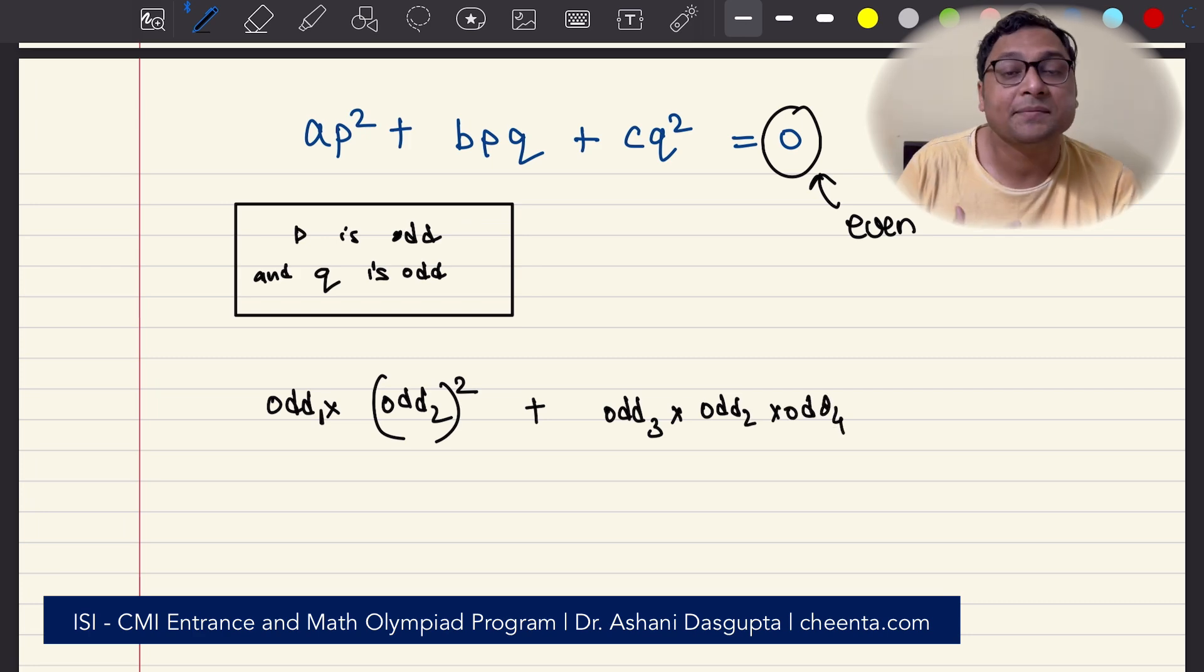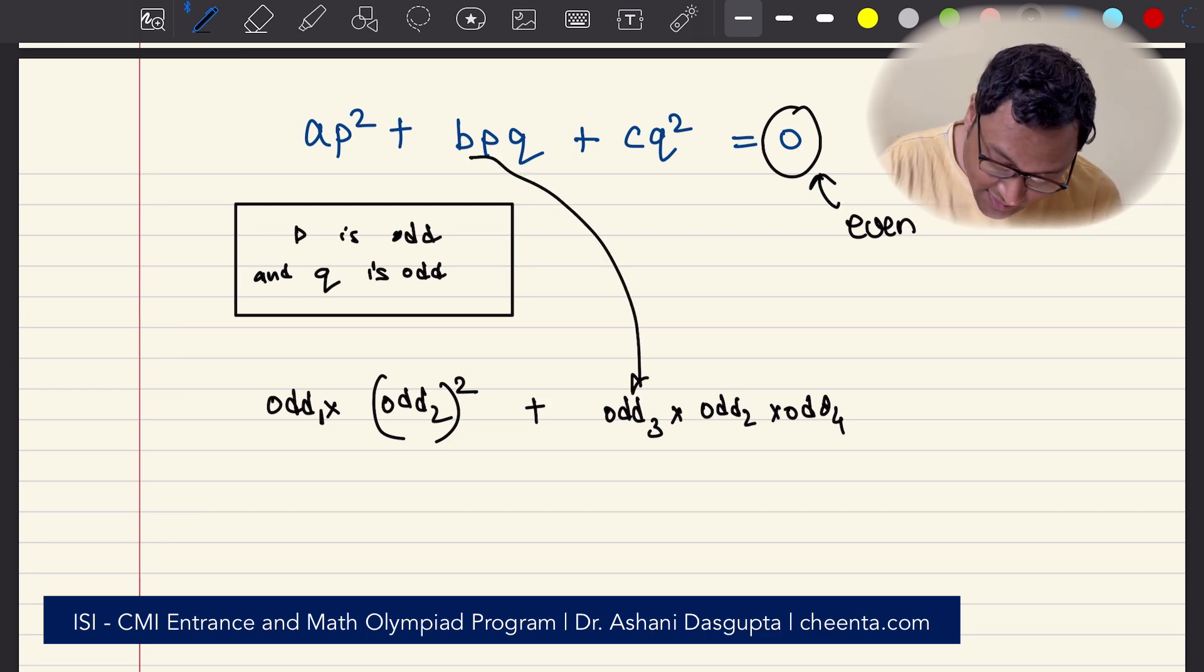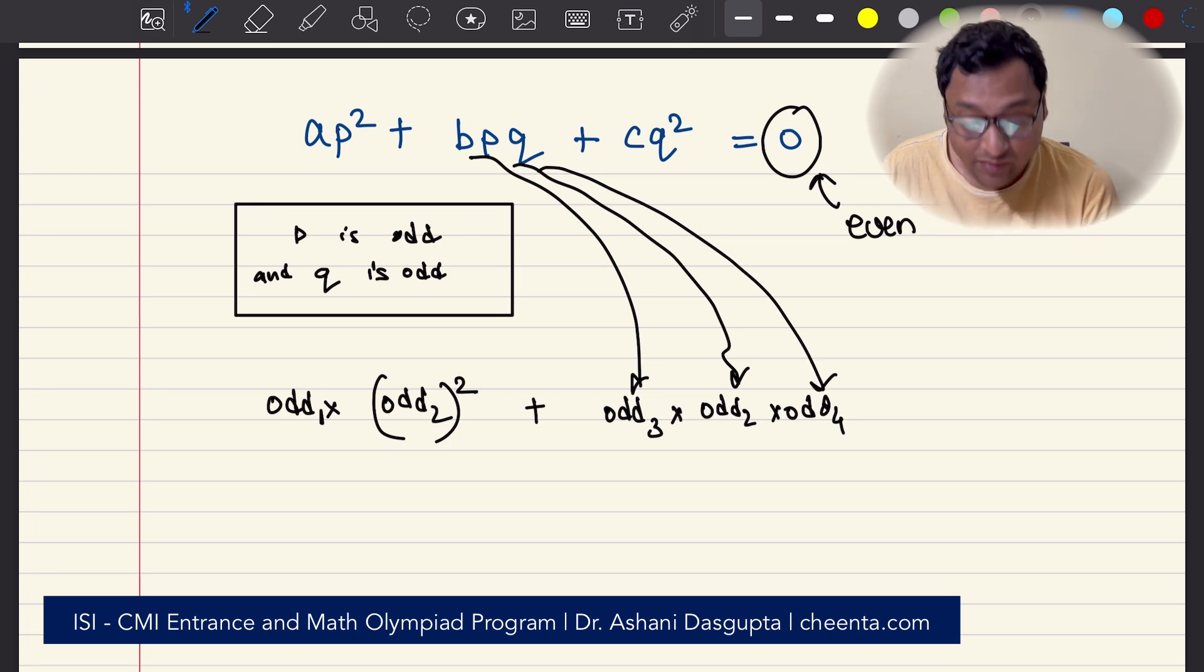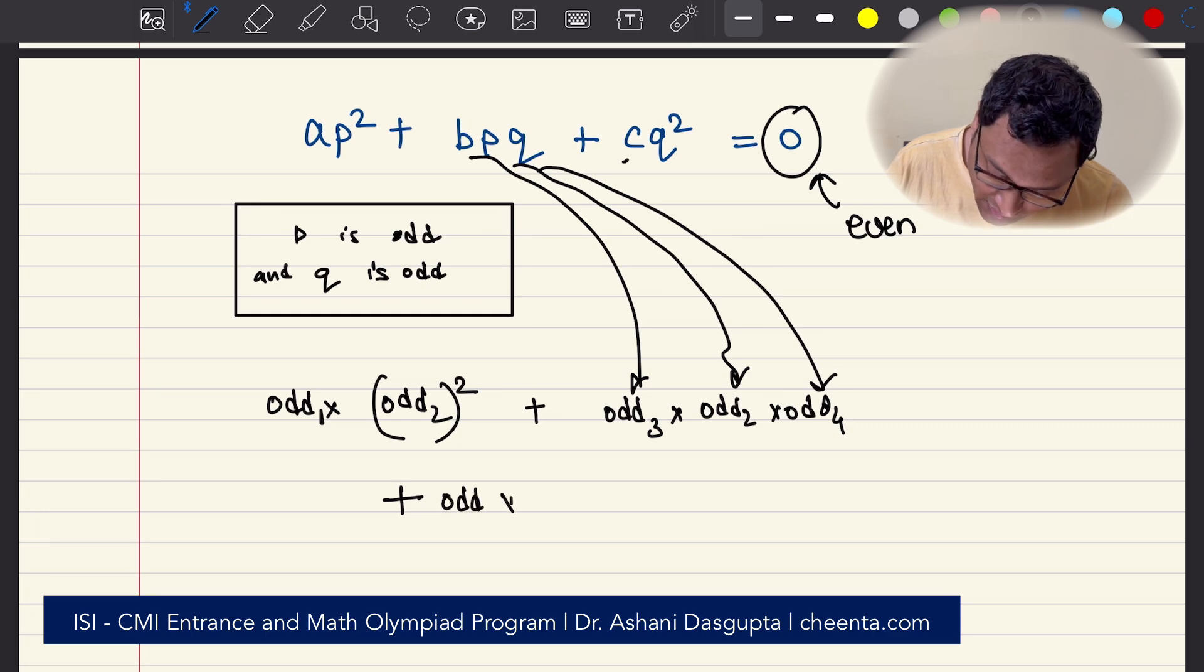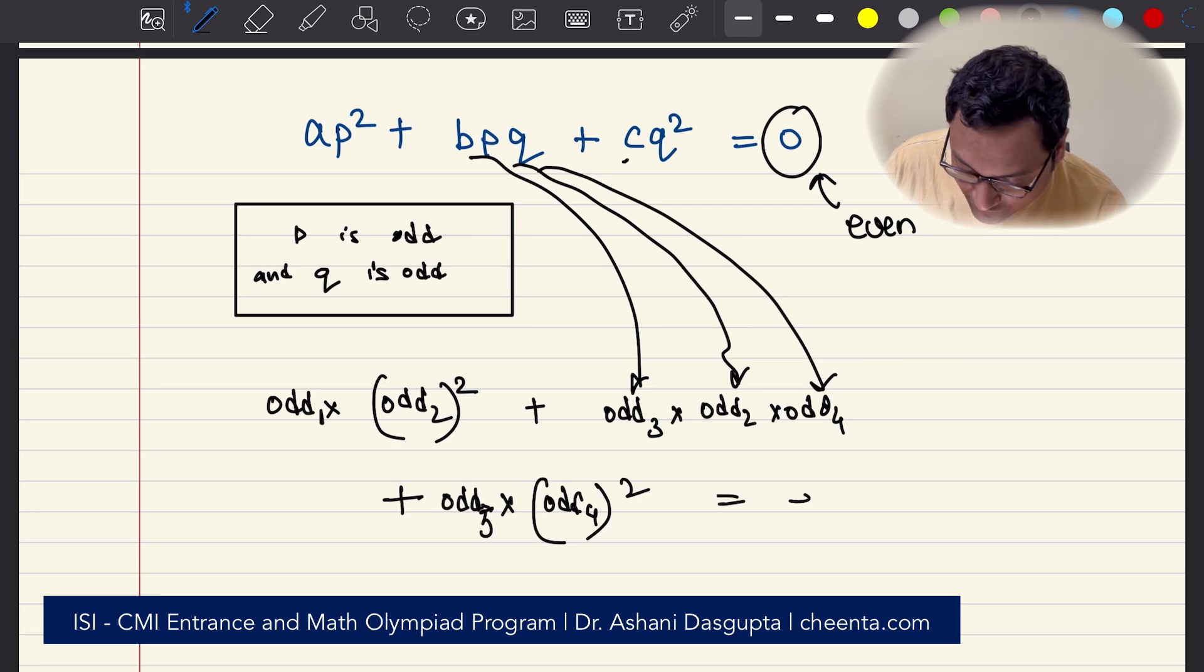Odd₂ times odd₄. I'm just writing the parity of these numbers. B is odd₃, P is odd₂, Q is odd₄, plus C is also odd. So odd times odd, let's call this odd₅, odd₅ times odd₄ whole square.